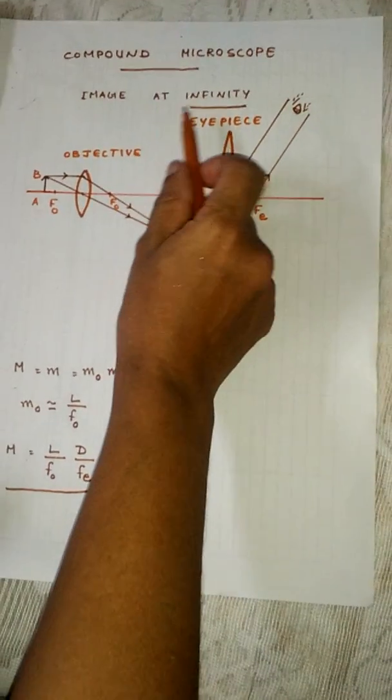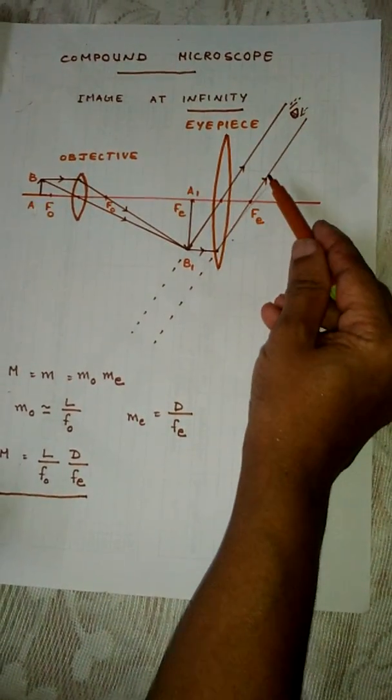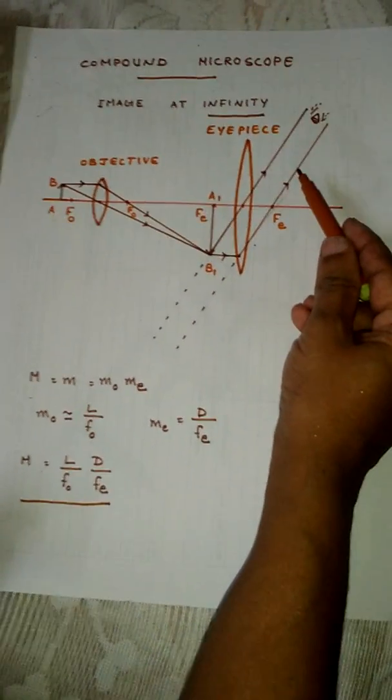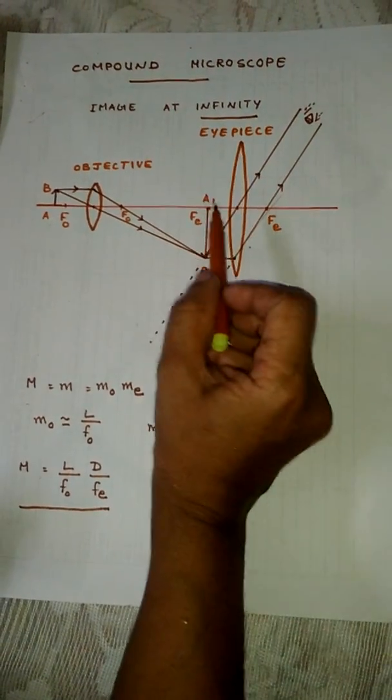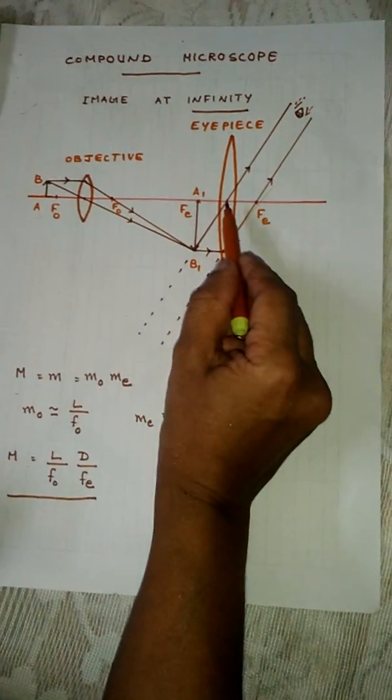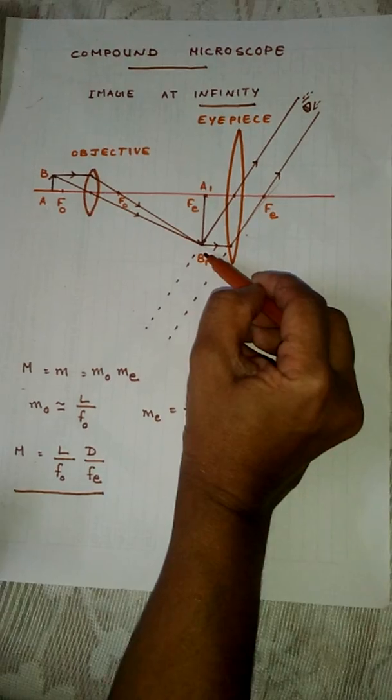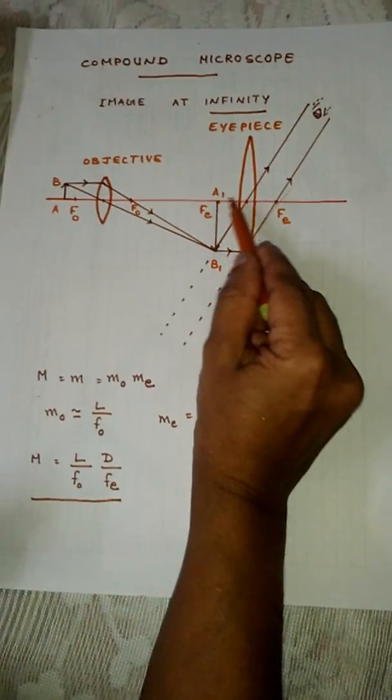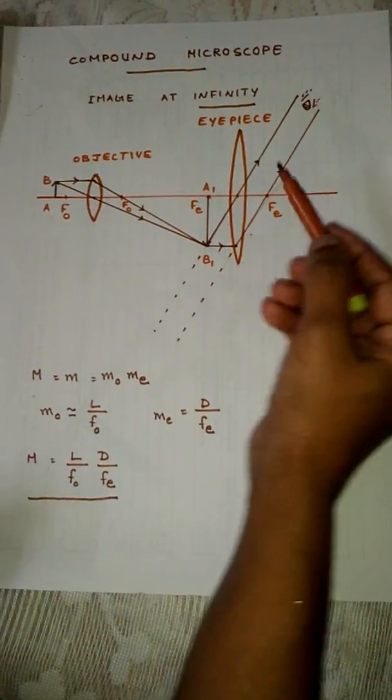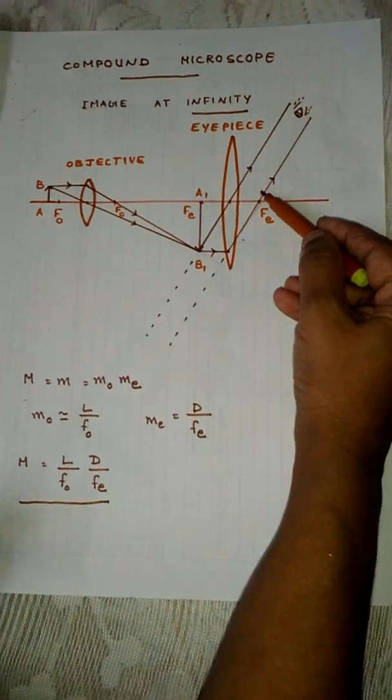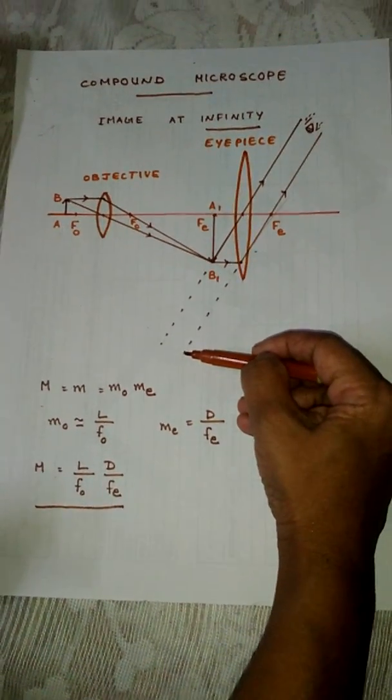If the final image is formed at infinity, then we can observe the image with relaxed eyes. For that, we should adjust the tube length in such a way that the first image A1B1 lies at the focus of the eyepiece. The refracted rays are parallel, so the final image is at infinity.